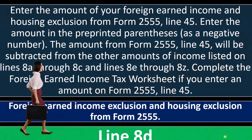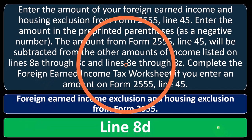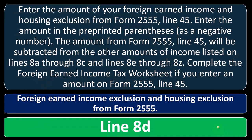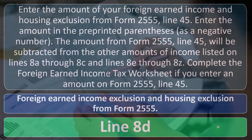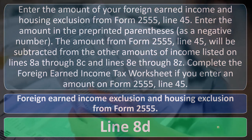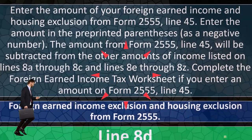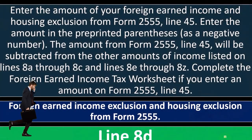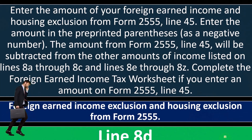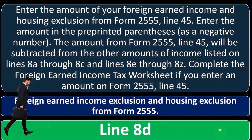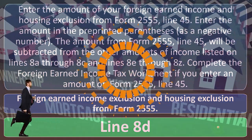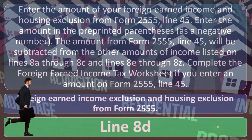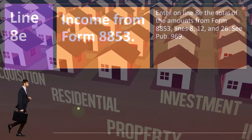In any case, enter the amount — pre-printed in parentheses as a negative number — from Form 2555 Line 45. This amount will be subtracted from the income listed on Lines 8a through 8c and 8e through 8z. Complete the foreign earned income tax worksheet if you enter an amount on Form 2555 Line 45, and refer to that form's instructions for more detail.